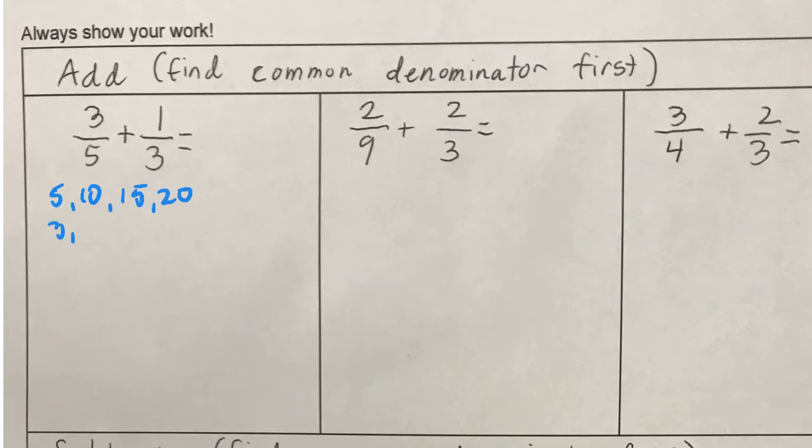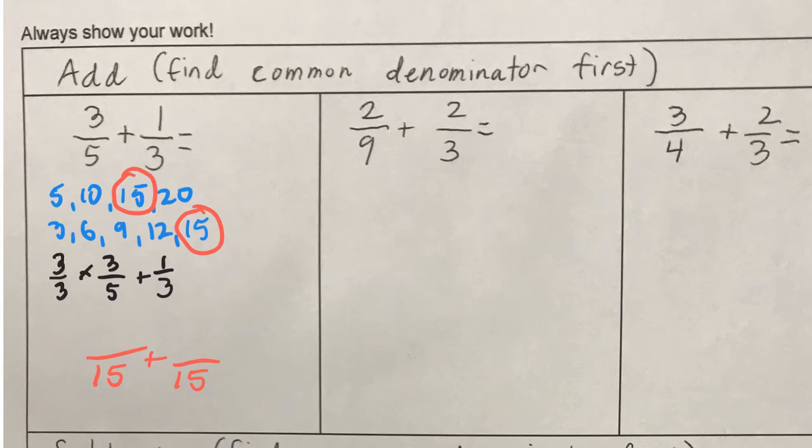Multiples of 3: 3, 6, 9, 12, 15. And there we go. 15 can be our common denominator. So, can you put 3 fifths into 15ths? And can you put 1 third into 15ths? Some of you can do this in your head, but others might need to write it out. Think about this: 5 times what is 15? 5 times 3 is 15. So I need to multiply this side by 3 thirds. And that's going to give me 9 fifteenths.